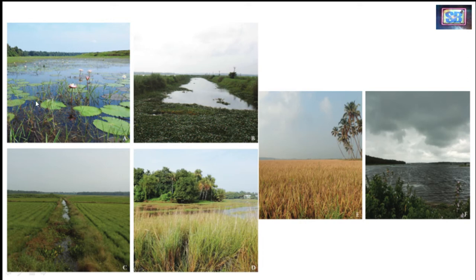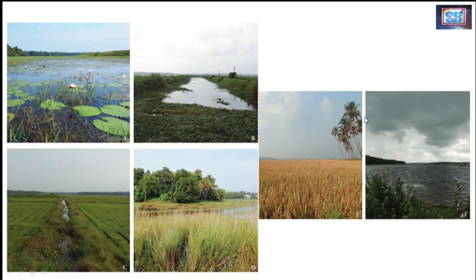The micro-habitats found in the Kol wetland area include a vegetated pond, a canal area, a paddy field with herbs, tall grass beds, groups at the edge, and a flooded area. These are some of the micro-habitats in that Kol wetland area.